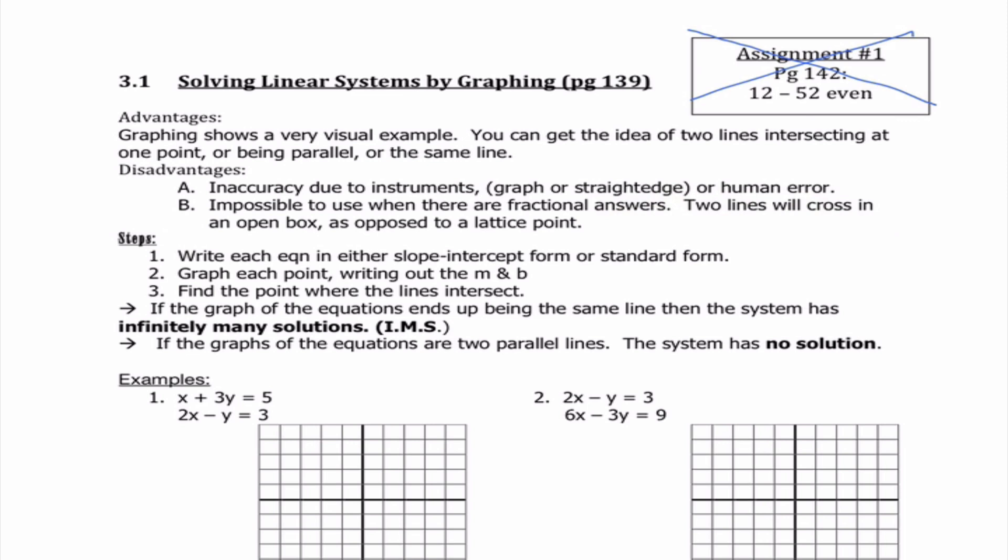Our steps. We're going to write each equation in either slope-intercept or standard form, just like last chapter. We're going to graph each line, writing out M and B. And then we're going to find the point where the two lines intersect.